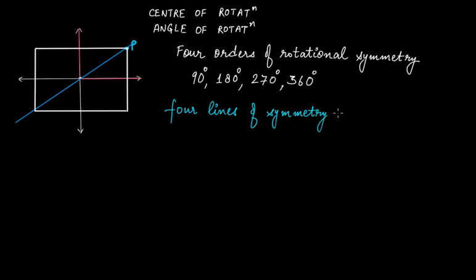So a square has four lines of symmetry and four orders of rotational symmetry. Note that not every figure has its lines of symmetry equal to its orders of rotational symmetry — but for a square, both happen to be four.